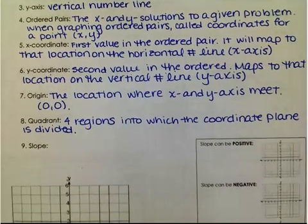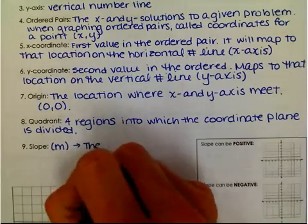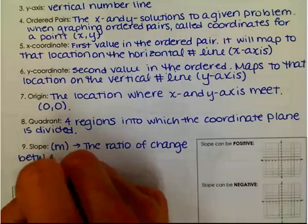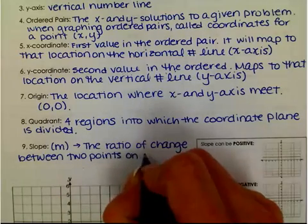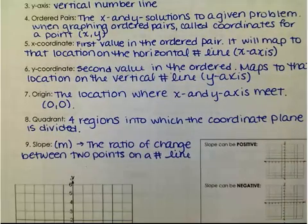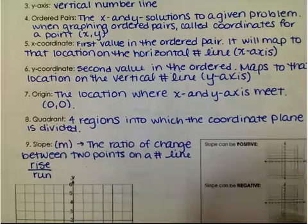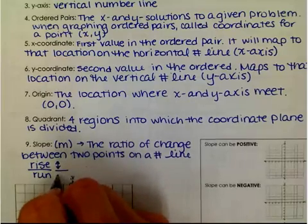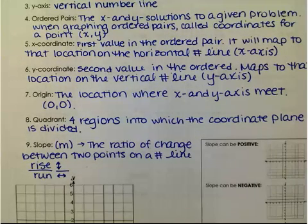Slope is represented by the letter M, and it is the ratio of change between two points on a number line. You are going to see slope often denoted by rise over run. The slope is going to be a fraction: the rise tells us where to go up and down, and run tells us left to right. So M is the slope, denoted by rise over run.